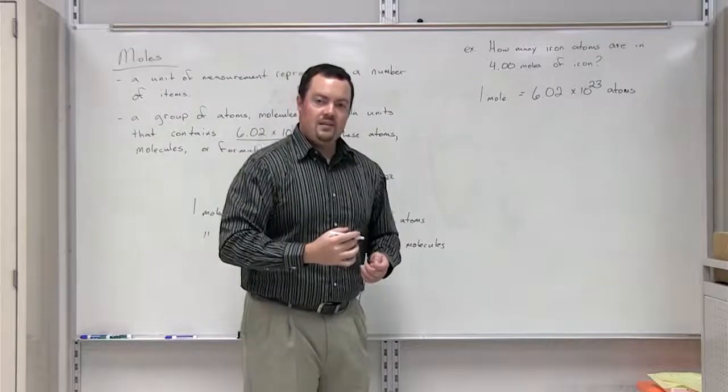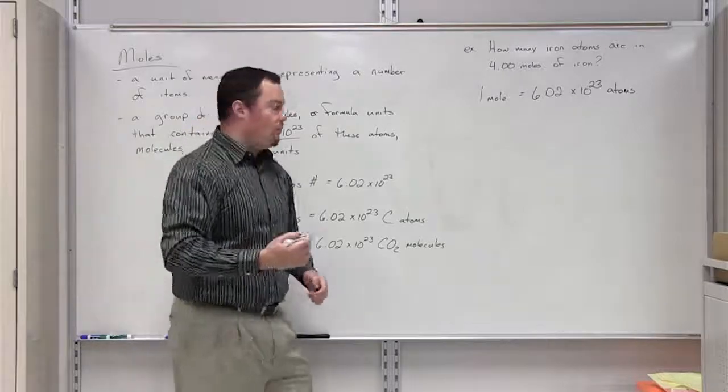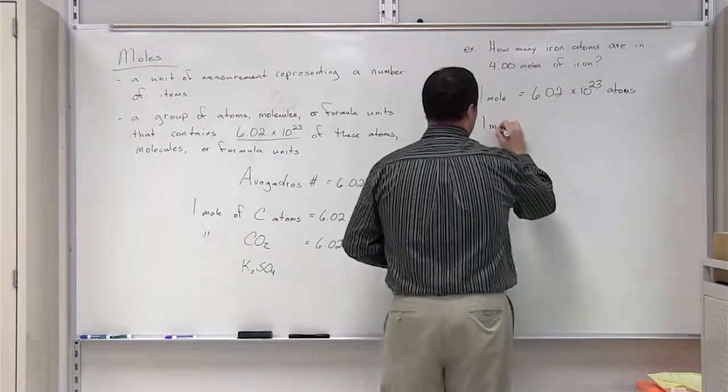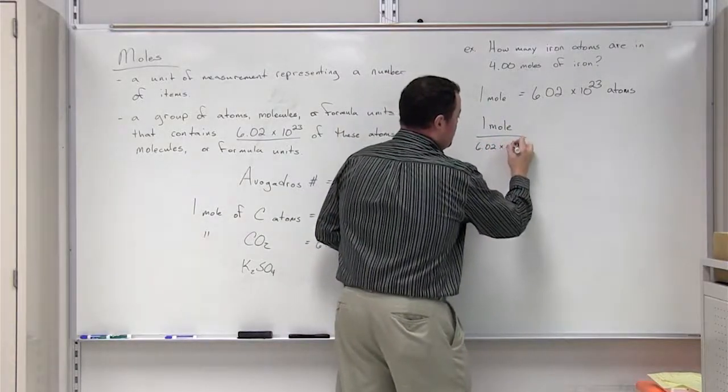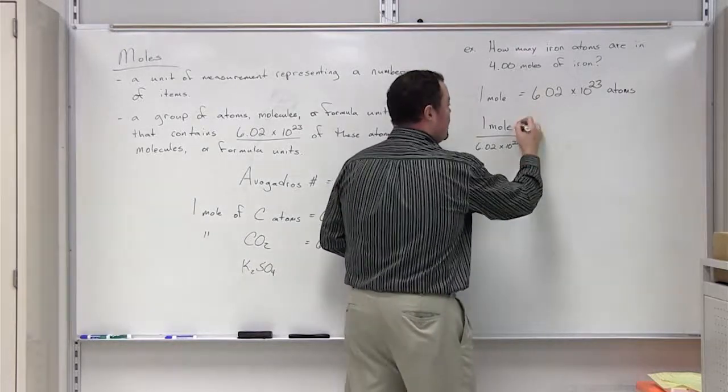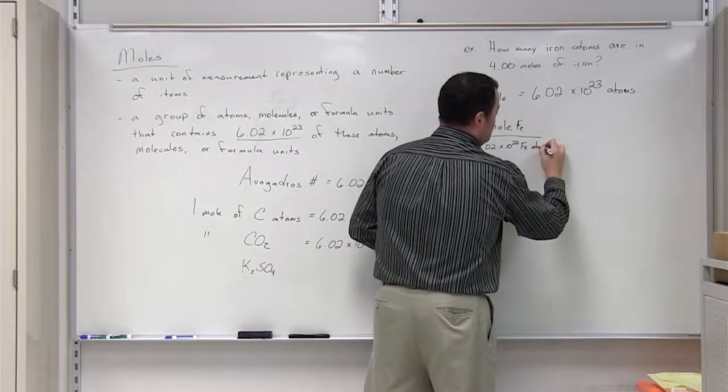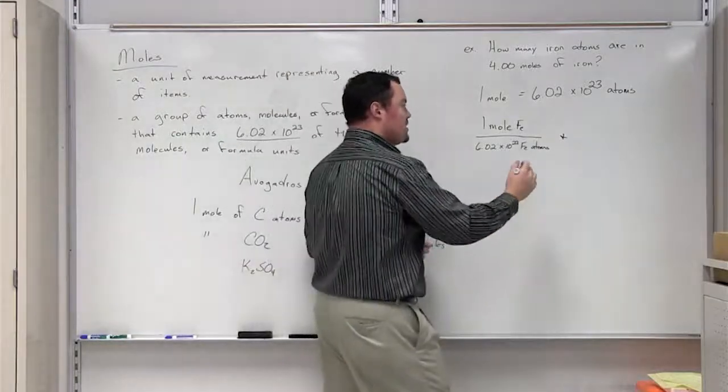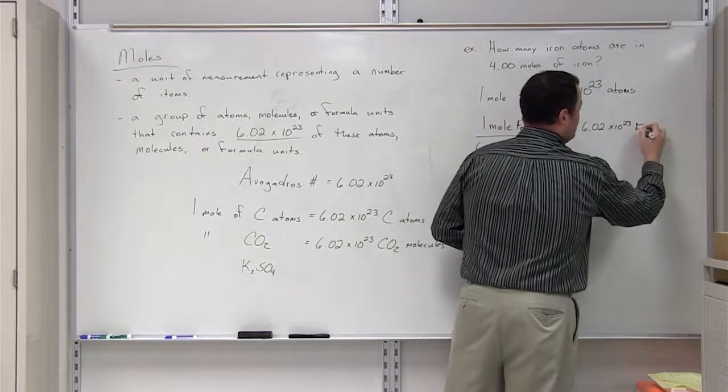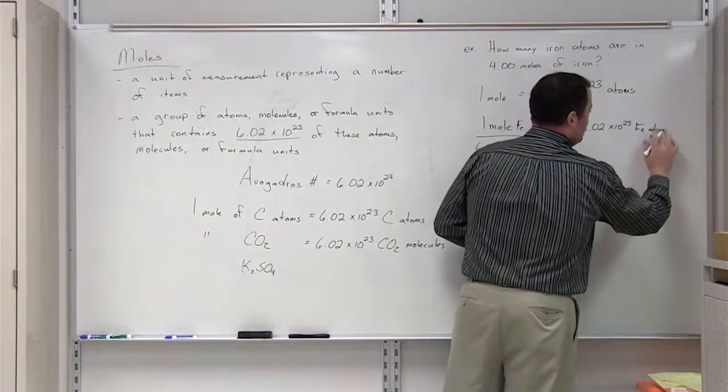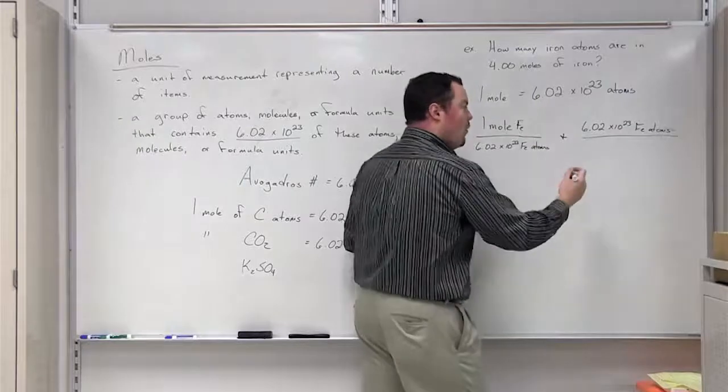From all equalities, we get two conversion factors. A conversion factor is simply stating an equality in fractional form. So our two conversion factors here is going to be 1 mole over 6.02 times 10 to the 23rd iron atoms, and our second conversion factor is 6.02 times 10 to the 23rd iron atoms is equal to 1 mole of iron.